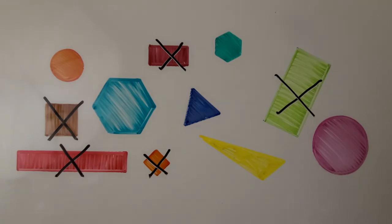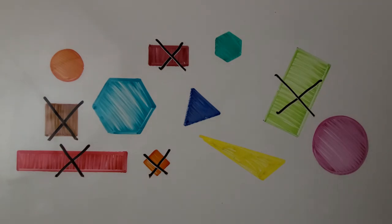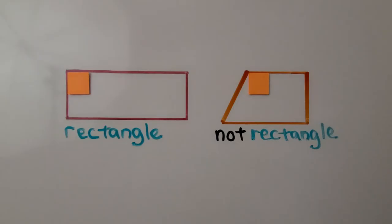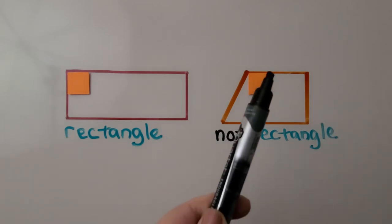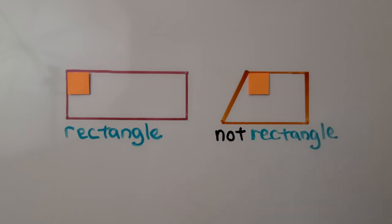Of the five rectangles that we found, how many were squares? That means they had four sides of equal length. I see this one and this one — I see two rectangles that are also squares. When we're looking for rectangles, we need to be careful. Some shapes have four straight sides, but they're not rectangles. This one has one, two, three, four sides that are straight lines, but it's not a rectangle. Just because a shape has four straight sides does not mean it's a rectangle.